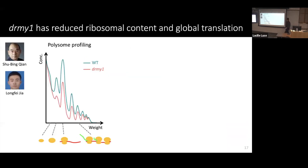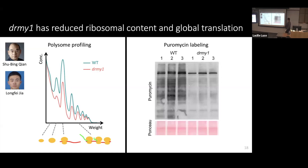We tested this in collaboration with Professor Shubing Chan and Lufei Jia. Through polysome profiling, we found that the contents of the ribosome subunits, the monosome, and the polysome are all drastically reduced in the dreamy1 mutant compared with wild-type, indicating defects in ribosome production. We also tested protein translation directly using puromycin labeling, where the signal on the gel represents the amount of protein translation during the incubation period. The dreamy1 mutant showed much lower signal, indicating that global protein translation is reduced in the mutant.